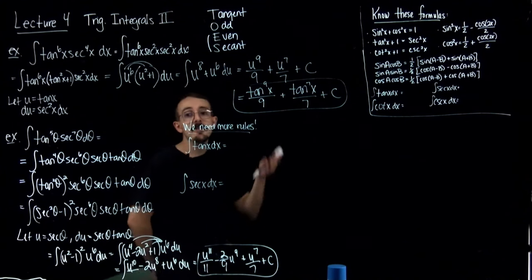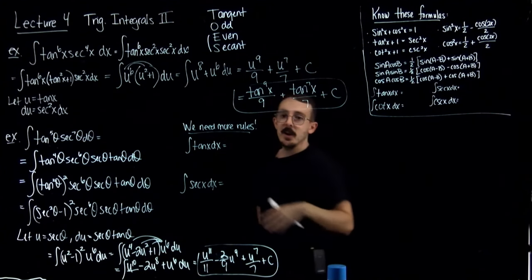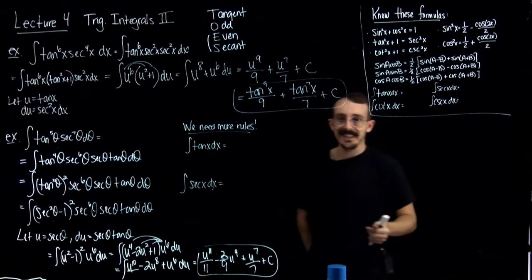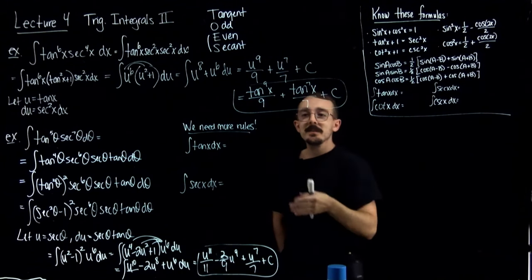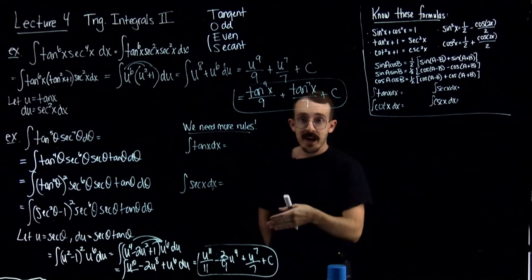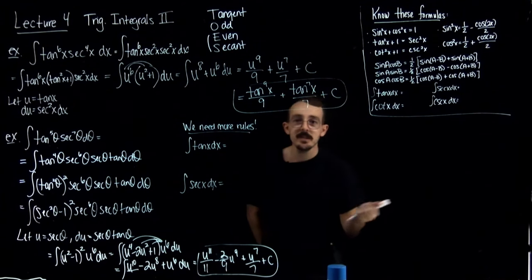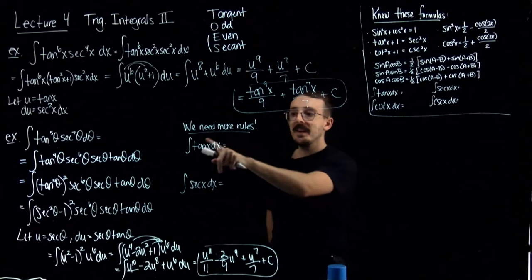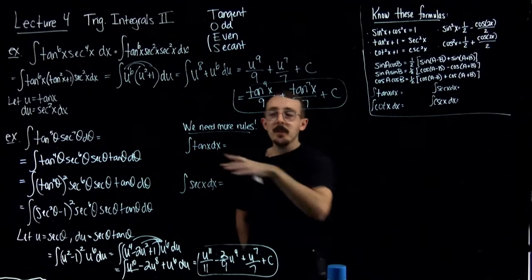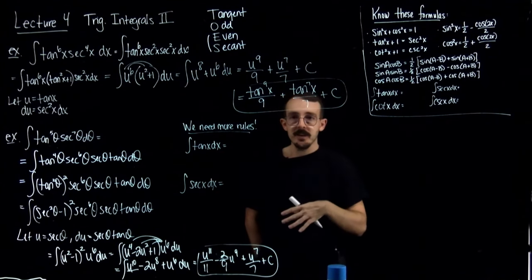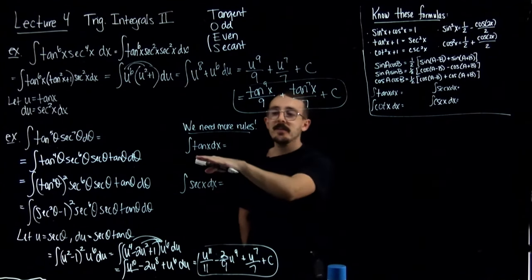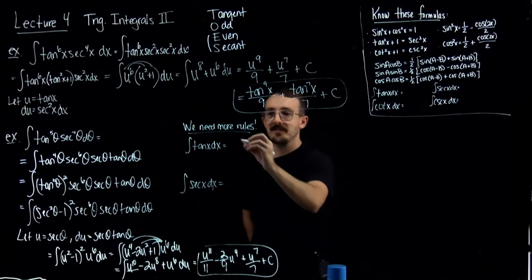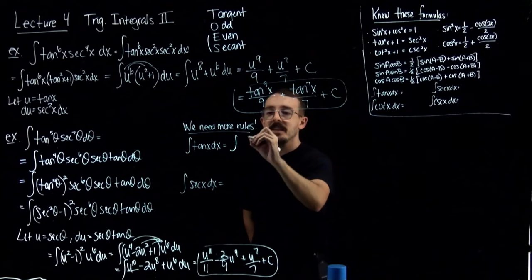What happens if you don't have one of these two cases? Lots of nightmarish stuff can happen. I'm going to build up a couple more rules so that when you encounter those integrals it won't be so bad. The first rule I want to talk about is the integral of tangent. We know the derivative of tangent is secant squared, but I didn't teach a rule in Calculus 1 for the integral of tangent — but we can actually get there.